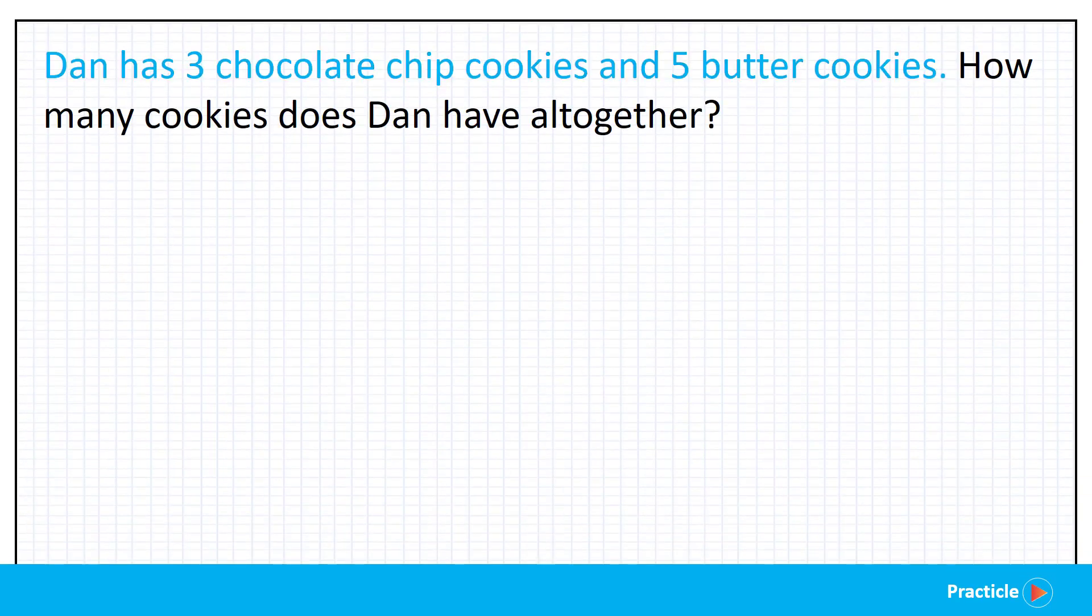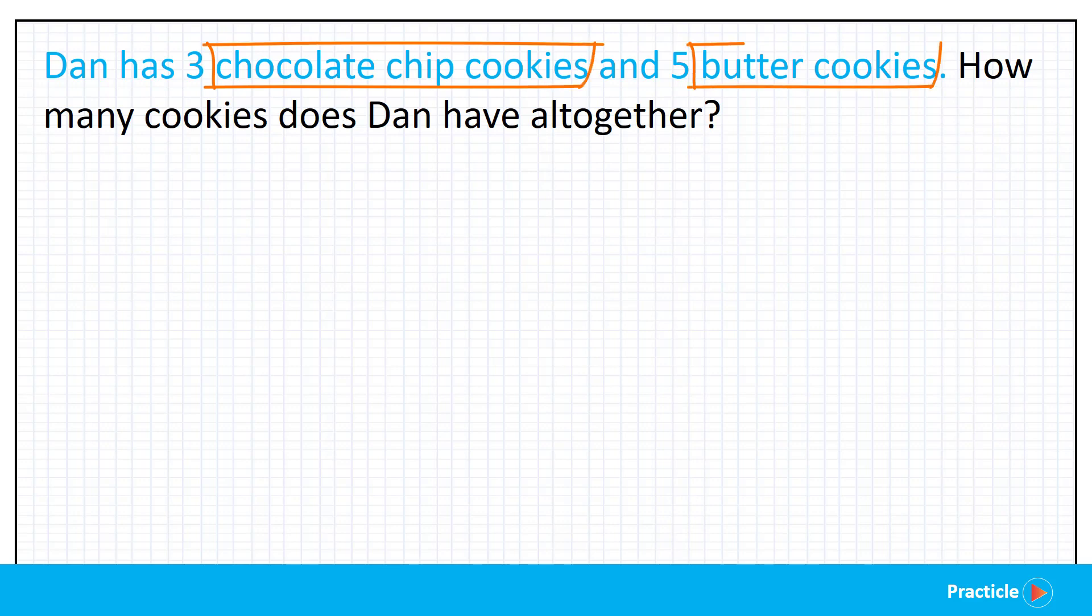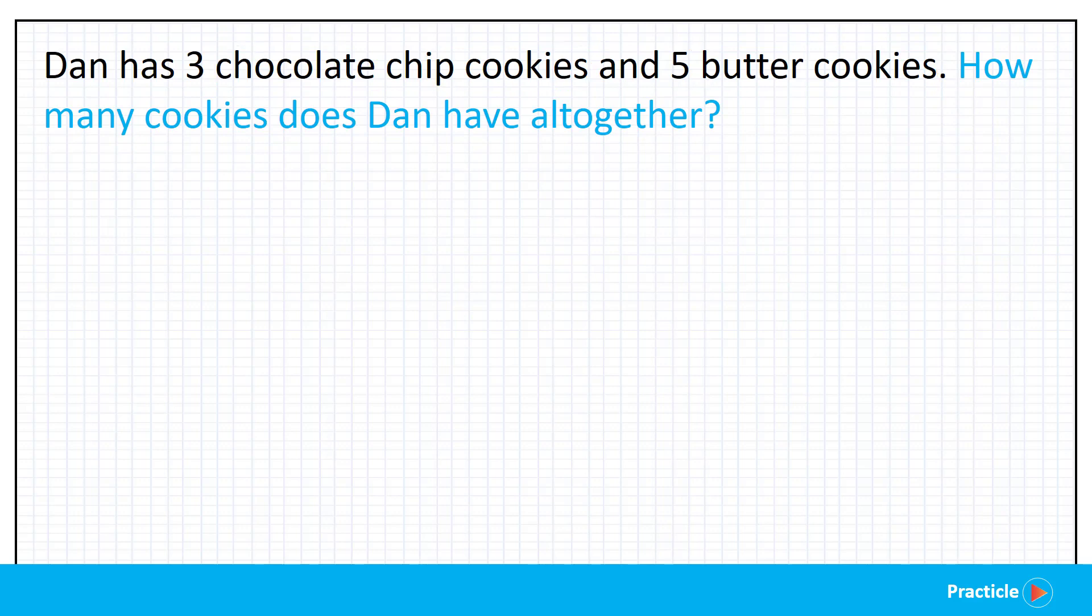Dan has 3 chocolate chip cookies and 5 butter cookies. Looks like we have 2 types of cookies here. And what are we supposed to find? How many cookies does Dan have all together? So we need to find the total number of cookies. So far so good?